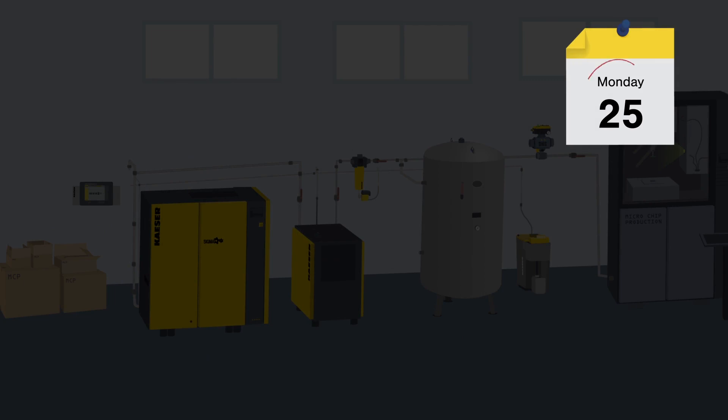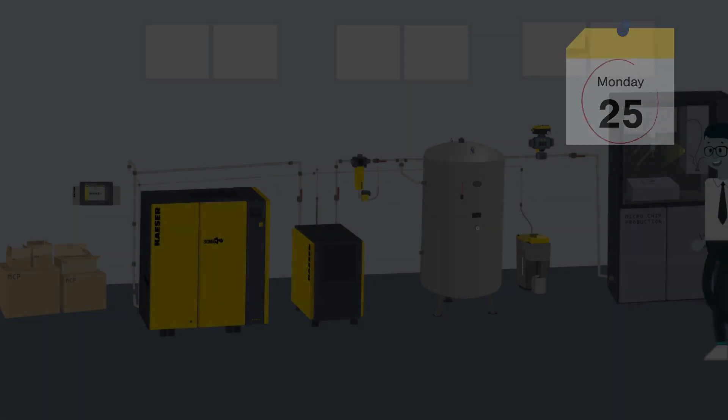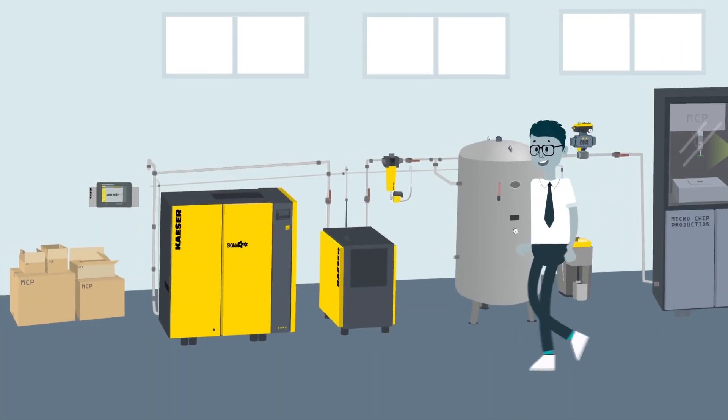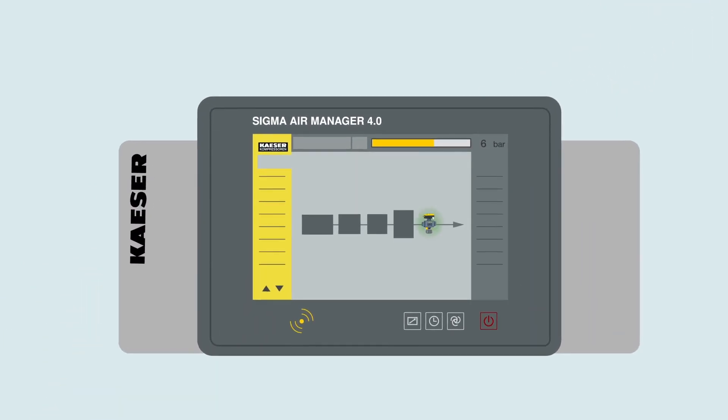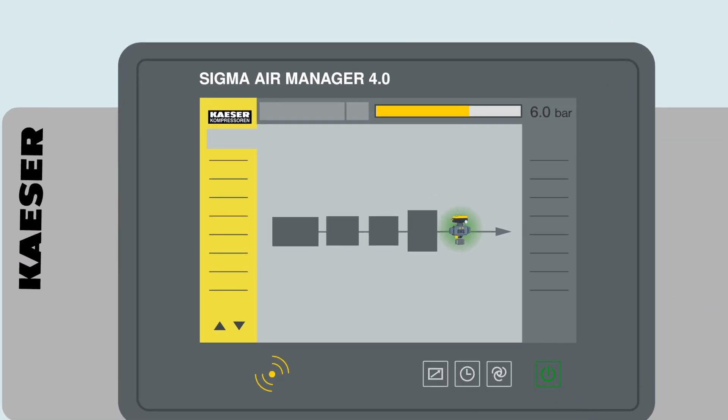which is of particular importance following weekends or operating breaks between shifts. With a DHS Air Main Charging System, the restarting compressors can push air against the defined network pressure as fast as possible.